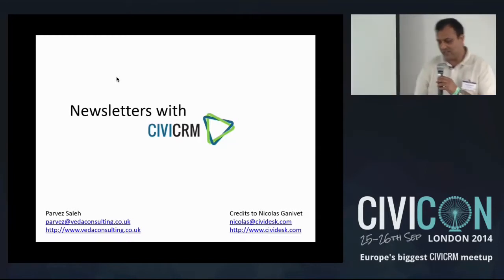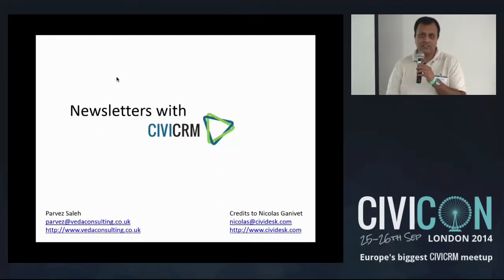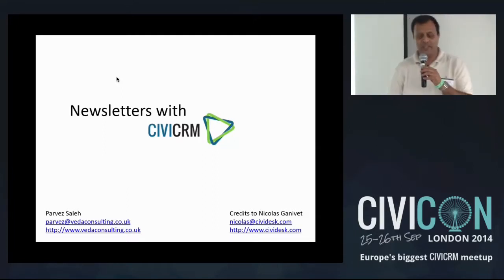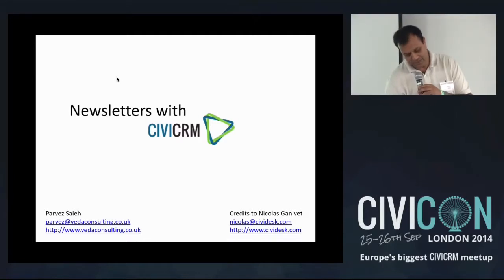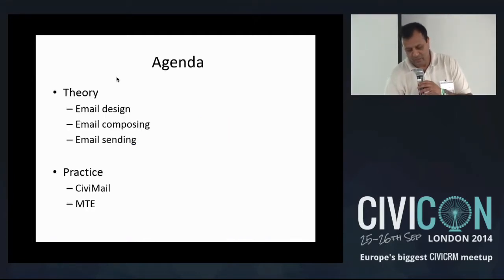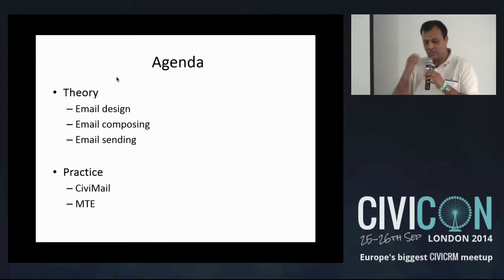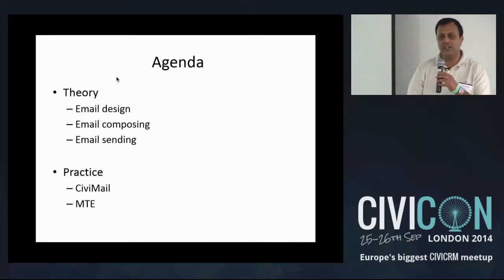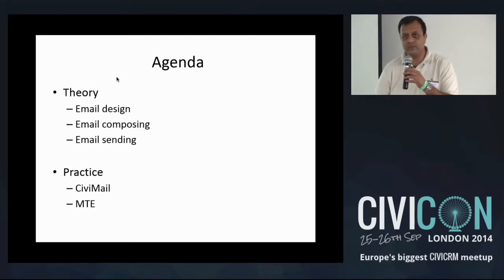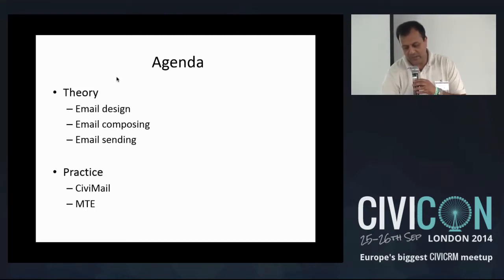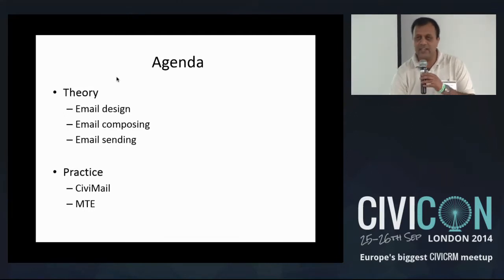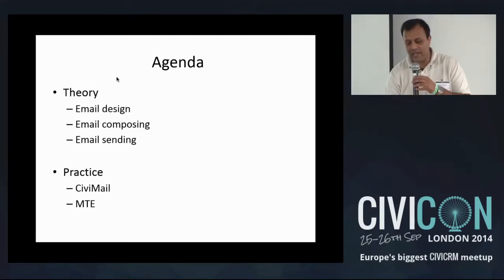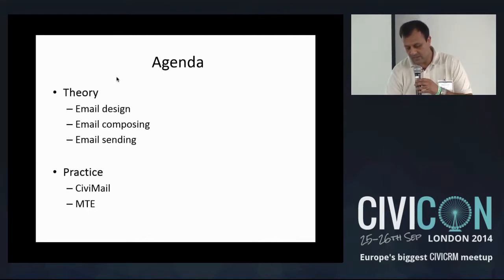I've got credits here to Nicholas Ghanivet because I've borrowed some of these slides from CiviCon San Francisco. The first part is purely around what you should take into account when sending emails. There are different elements — the designing process, the composing process, and the actual method you send. These all hugely impact what ends up in your customers' inboxes, and we'll be using CiviMail throughout this presentation, as well as showing MailJet and MailChimp.